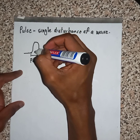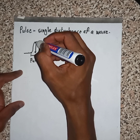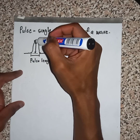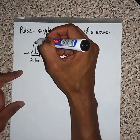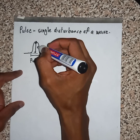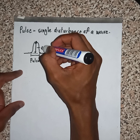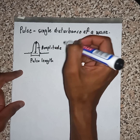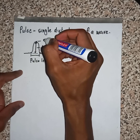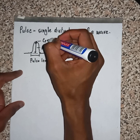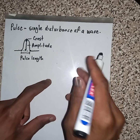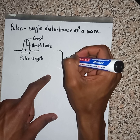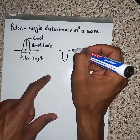We also have this displacement from the dotted line up until our maximum point. We call that displacement the amplitude. We also have that maximum point — we call it a crest.